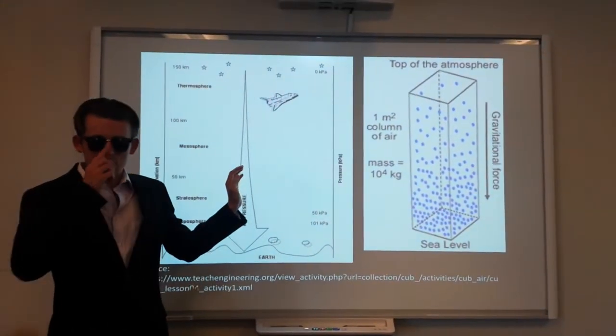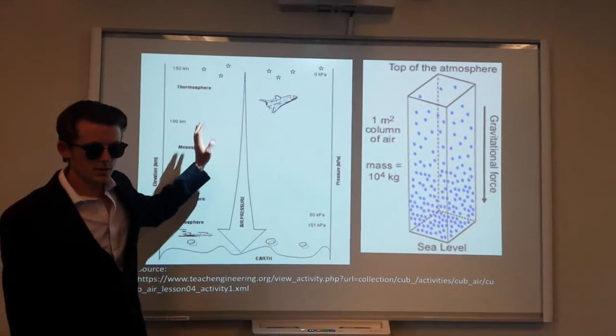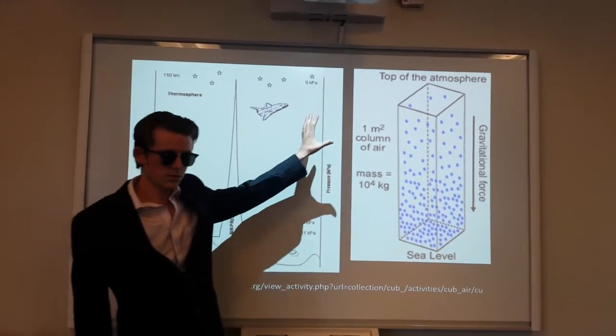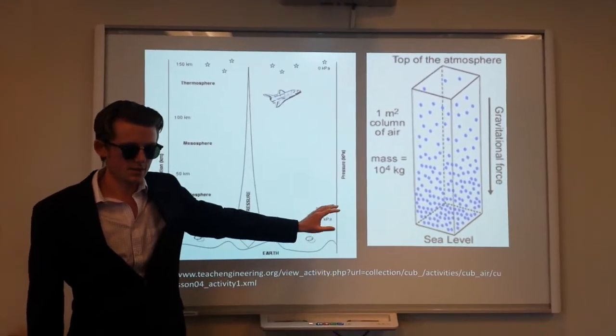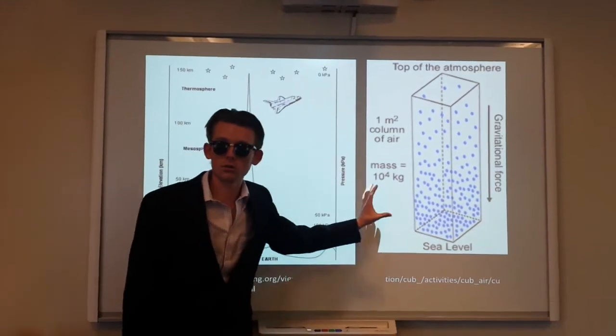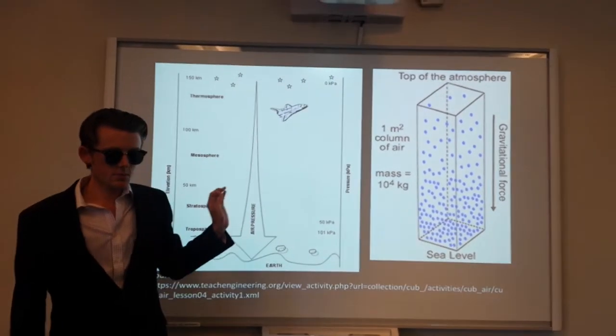What this means is that air density will change with height. As you can see in this illustration, as you come closer to sea level, the gas particles become more densely packed due to the gravitational pull of the Earth. So what does this mean for our pressure?